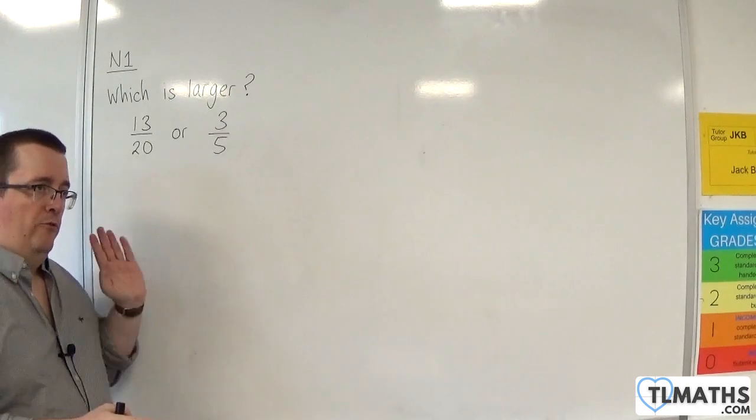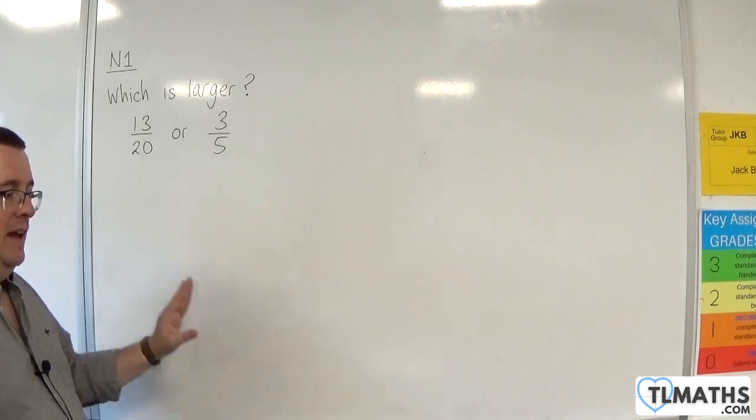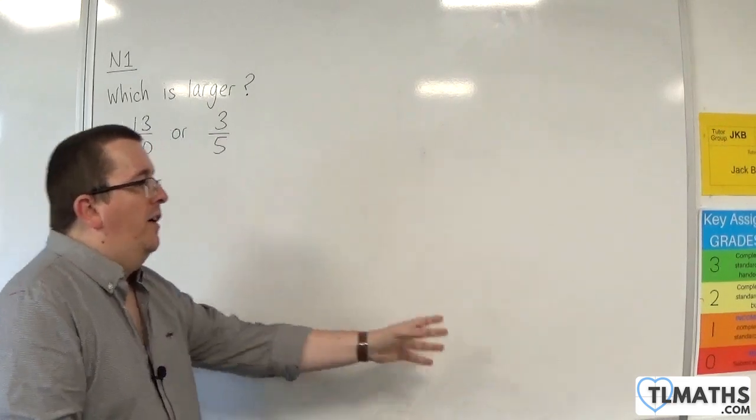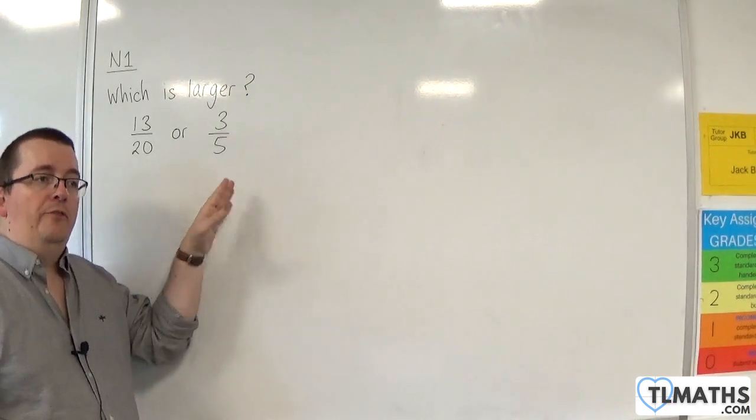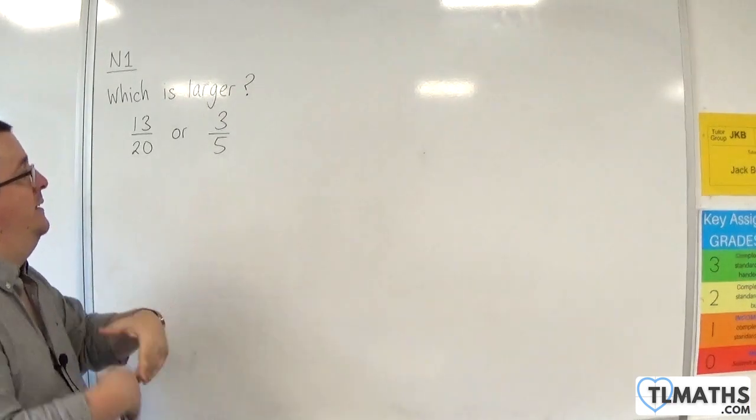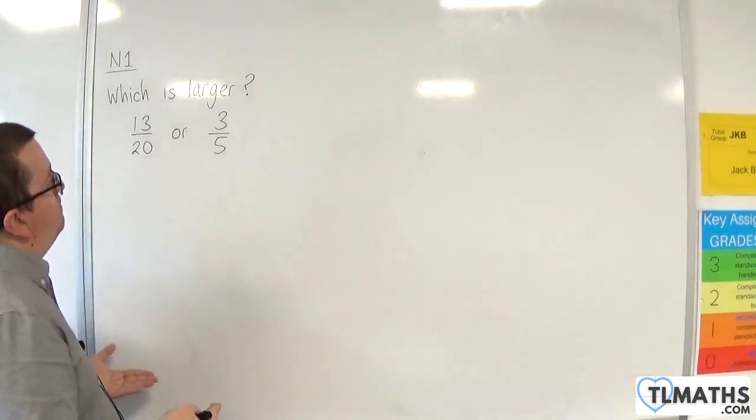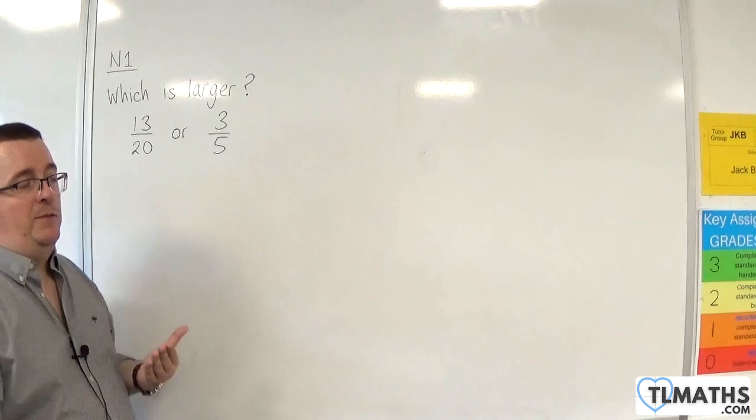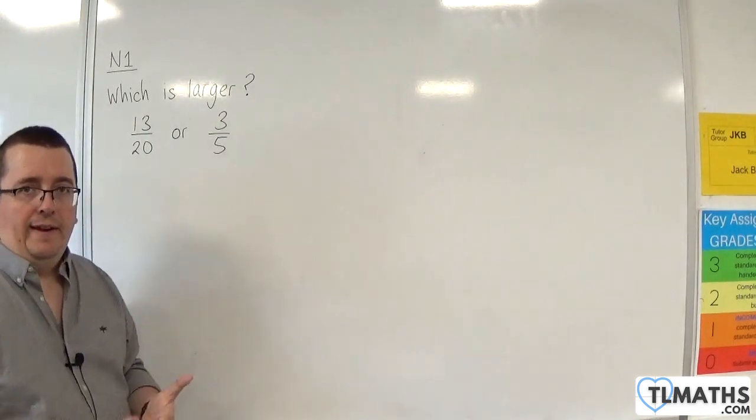So, I will do it that way first. And if you want to hang around and see another way of doing it, where I will aim to get them both with the same denominator, so I'll find an equivalent fraction with the same denominator, then please stick around. It's something you would need to be able to do anyway, but I will cover it in more detail in the later section.